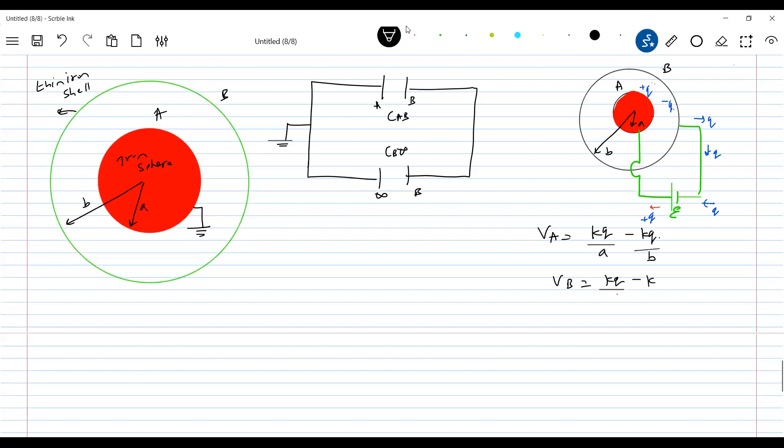kQ/a, so kQ/b minus kQ/b. Potential difference VAB, what should be the potential difference VAB? I think this will become zero, so this will be kQ, kQ/b minus kQ/b minus a by ab. This is the potential difference between VAB. Okay, let's find out the capacitance CAB.